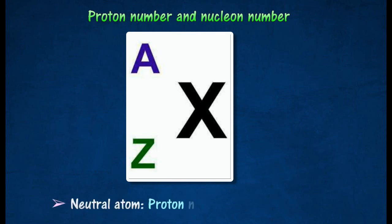In a neutral atom, the proton number also represents the number of electrons in orbit.